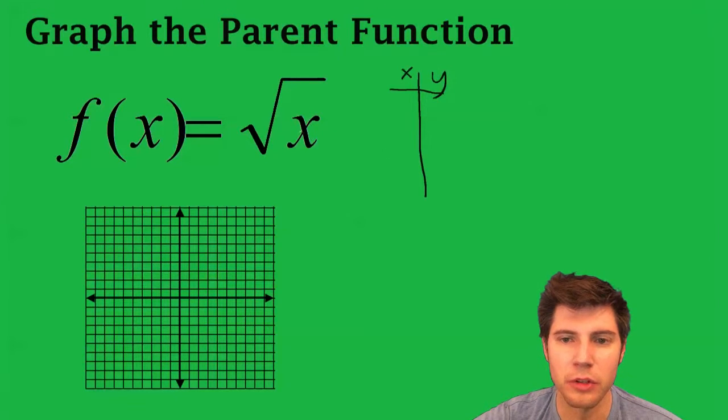And since this is being square rooted, we want numbers that square root easily: 0, 1, 4, 9.